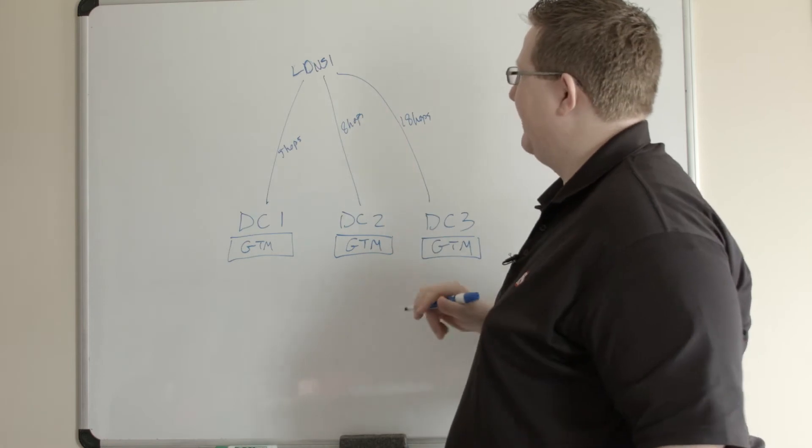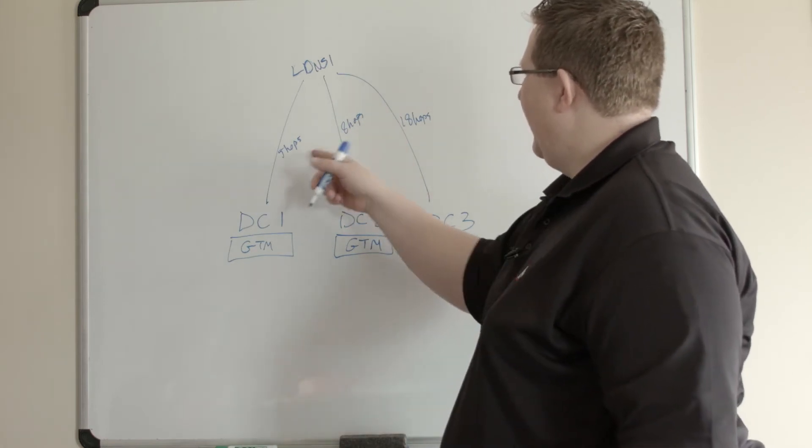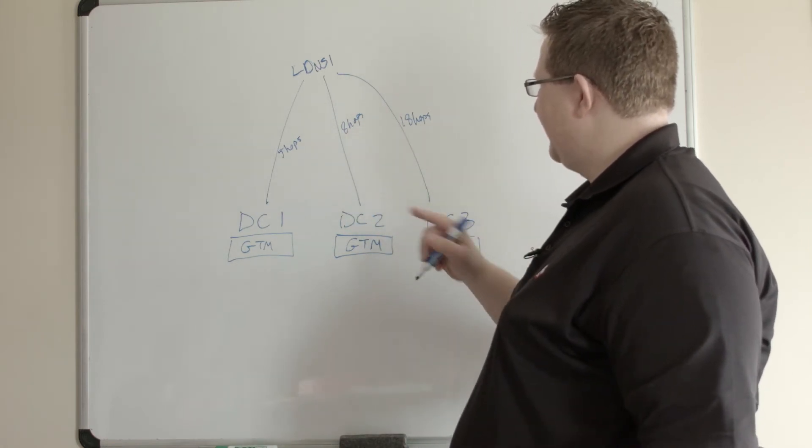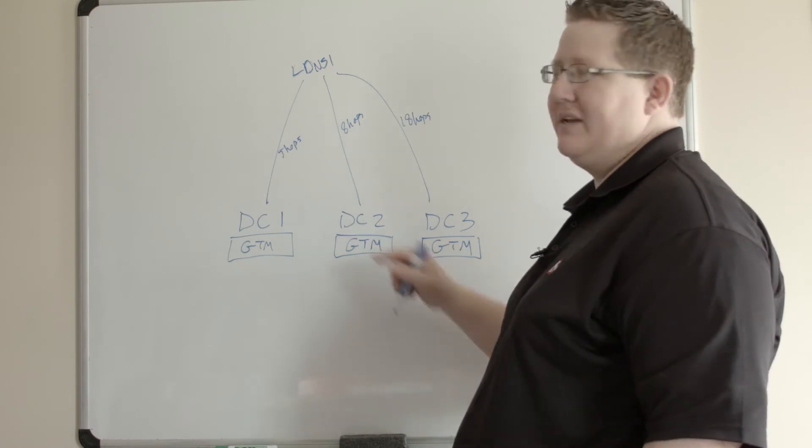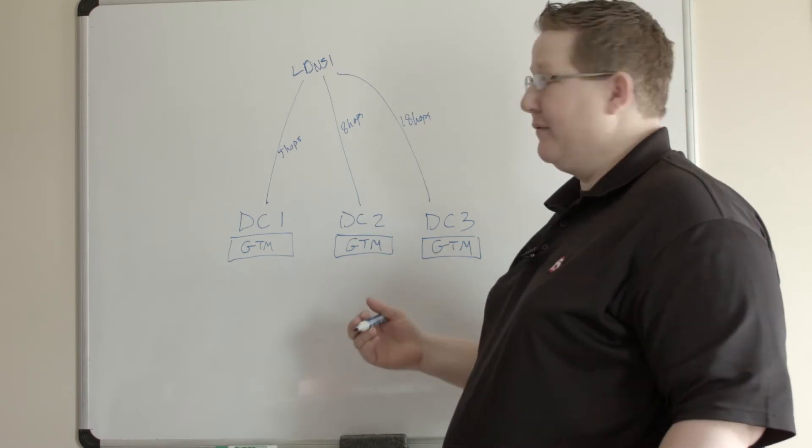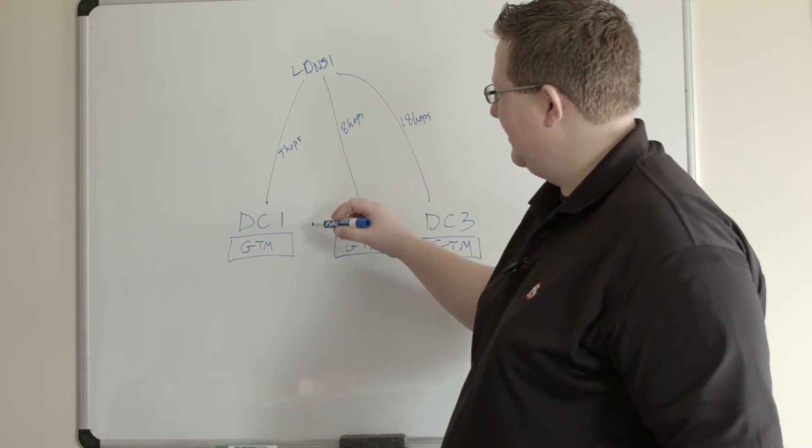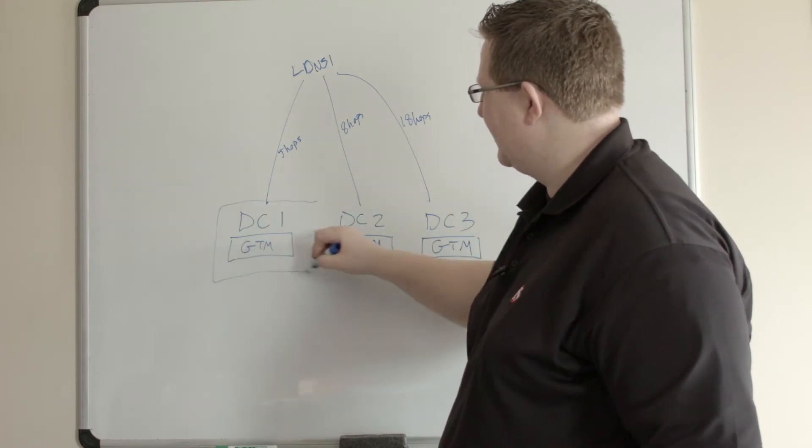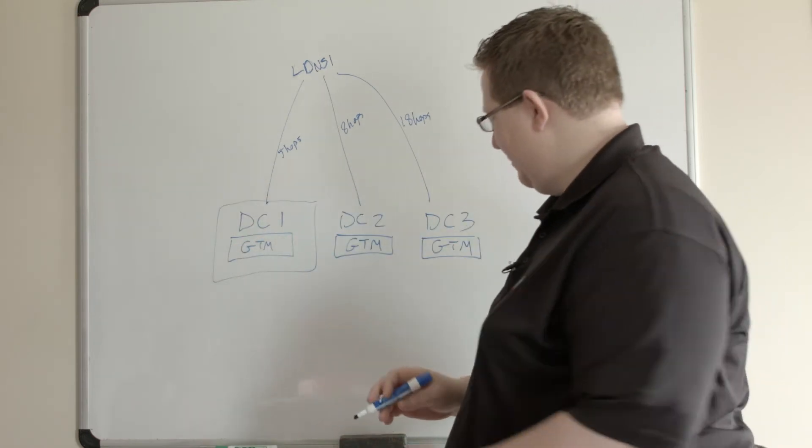But the next time in, I have stats for this LDNS1, and I've got that established as 5, 8, and 18 hops away from these data centers. Then, if my preferred setting is hops, I'm going to select data center 1 because it's the fewest hops away. Pretty basic.